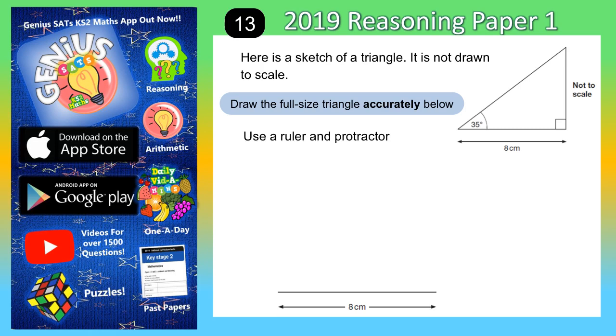Well, a protractor is just a posh word for an angle measurer. And we've got to make sure everything's accurate. So we've got to make sure that this 35 degrees is definitely 35 degrees from the bottom left corner, and we've got to make sure that we've definitely got a right angle from the bottom right corner.